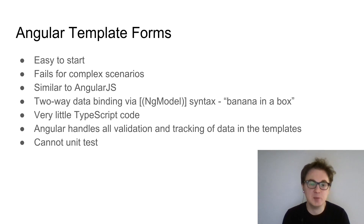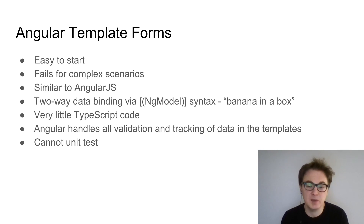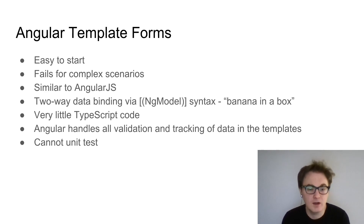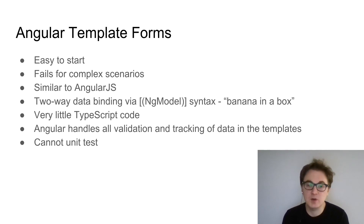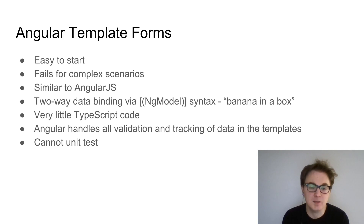The way we capture input from the user and relate that to our TypeScript code is called banana-in-a-box syntax, which allows us to do two-way data binding. As shown with ng-model, you use square brackets and parentheses around the ng-model directive and assign it to a property on the component's class. Template forms use very little TypeScript code since they mostly live in the templates, and Angular handles all the validation and tracking of data. Using that two-way binding syntax, it automatically captures changes in both the TypeScript and the user's input.